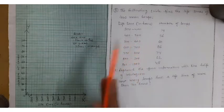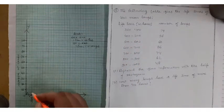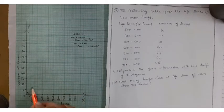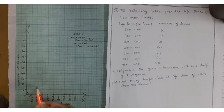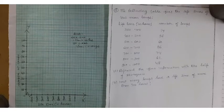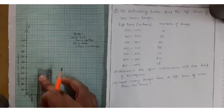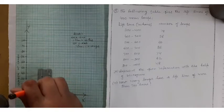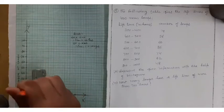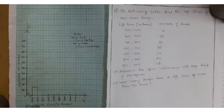300 to 400 is 14. 14 is near about, see here. This is 15, one less, this is 14. So you have to draw one line from here and then join with help of scale. So 300 to 400, this 14 is, I am making like this.